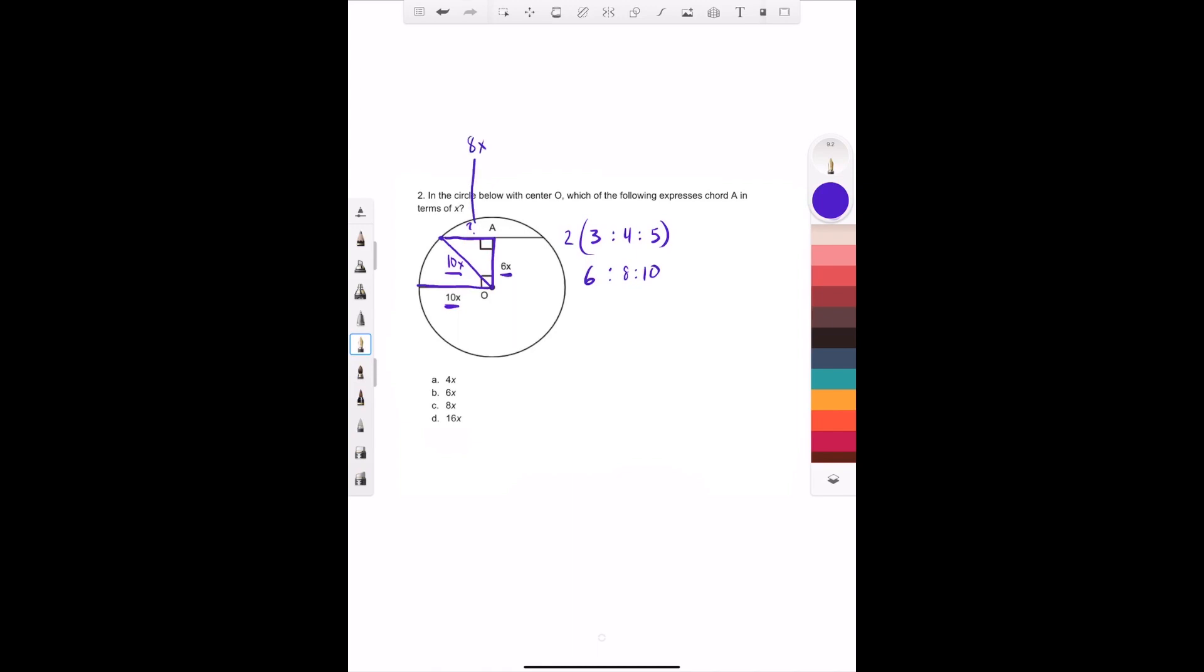And if you take a line from the center, you go to a chord, which is what this is, and it's at a 90 degree angle, it actually cuts it in half. So each of these are 8x. Two times 8x is 16x.